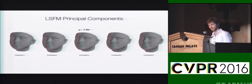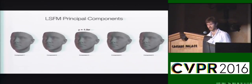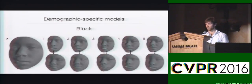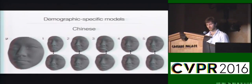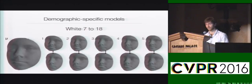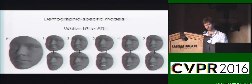We furthermore have, for each individual in our training set, their age, gender and ethnic background. We use this information to construct bespoke 3D morphable models for different demographic groups. These tailored models, shown here, the first of their kind, are also made publicly available.